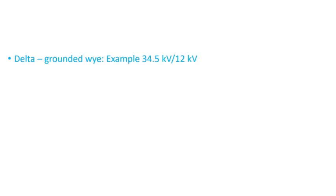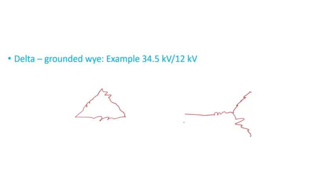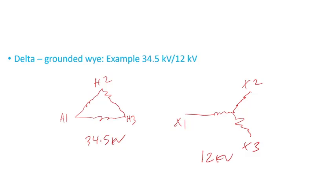For a delta grounded-Y example — say 34.5 kV to 12 kV — and just a disclaimer: I'm not worried about vector group or polarity for this video, the intent is just to look at the test connection. So you have H1, H2, H3 bushings on the 34.5 kV delta side, and X1, X2, X3 bushings on the 12 kV side, with the neutral connected to the X0 bushing and grounded.